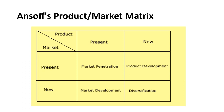We will understand each one with a simple example. The first strategy is market penetration. Here the product is existing and the market is also existing — the company has been dealing in the same market with the same product for many years. The question is: how to increase market share, attract more customers in the same market, and take share from competitors?